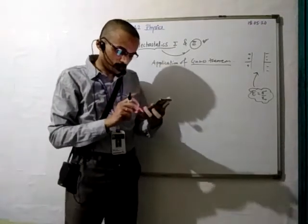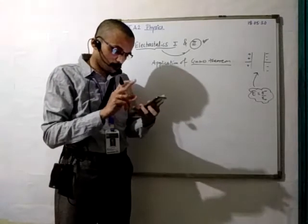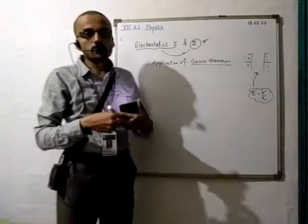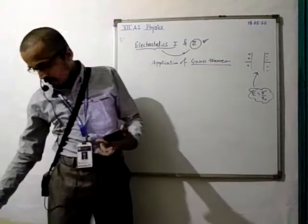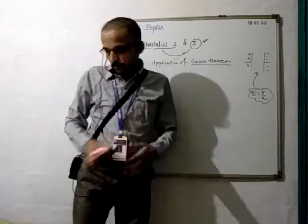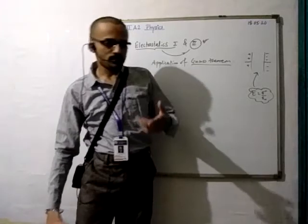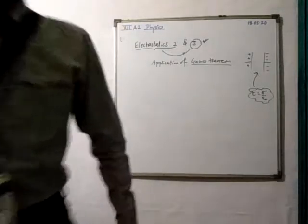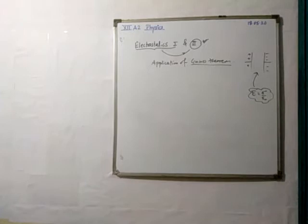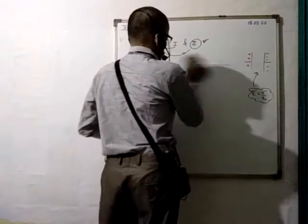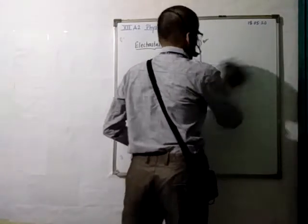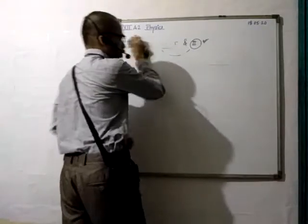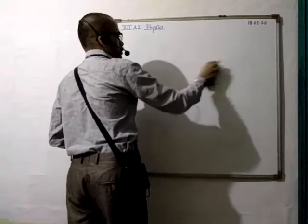Page number 2 will be full of Electrostatics 1, and then on page 2 it will start with Electrostatics potential. So you have to summarize and revise Electrostatics 2. As the exam is concerned, which will be there — so friends, you have to do the Electrostatics 1 subpart and for the remaining part, from Electrostatics potential you have to do everything.